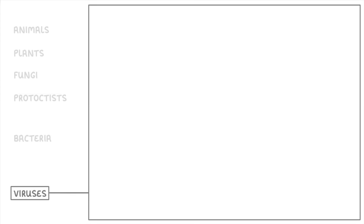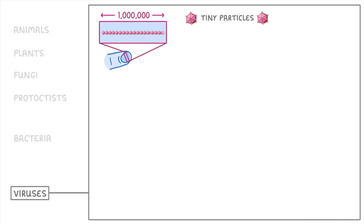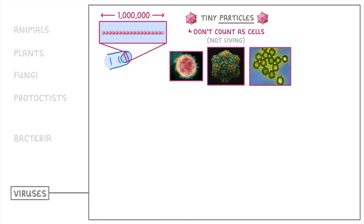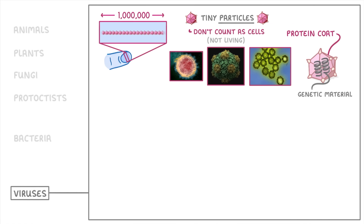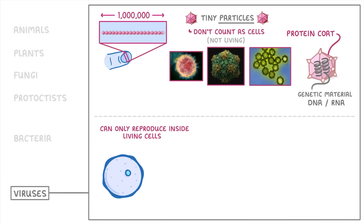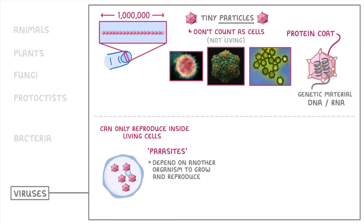Lastly, we have viruses, which are basically super tiny particles — you'd be able to fit almost a million of them across the width of a single fingernail. We call them particles because they don't count as cells, and remember, they're not living at all. Viruses come in loads of different shapes and sizes, but their basic structure involves a protein coat around the outside surrounding some genetic material on the inside, which could be DNA or RNA. The main thing to remember is that viruses can only reproduce inside living cells, so they have to infect other organisms — like animals, plants, protoctists, fungi, or bacteria — and use their cells to replicate. Because of this, we call them parasites, meaning they depend on another organism to grow and reproduce.